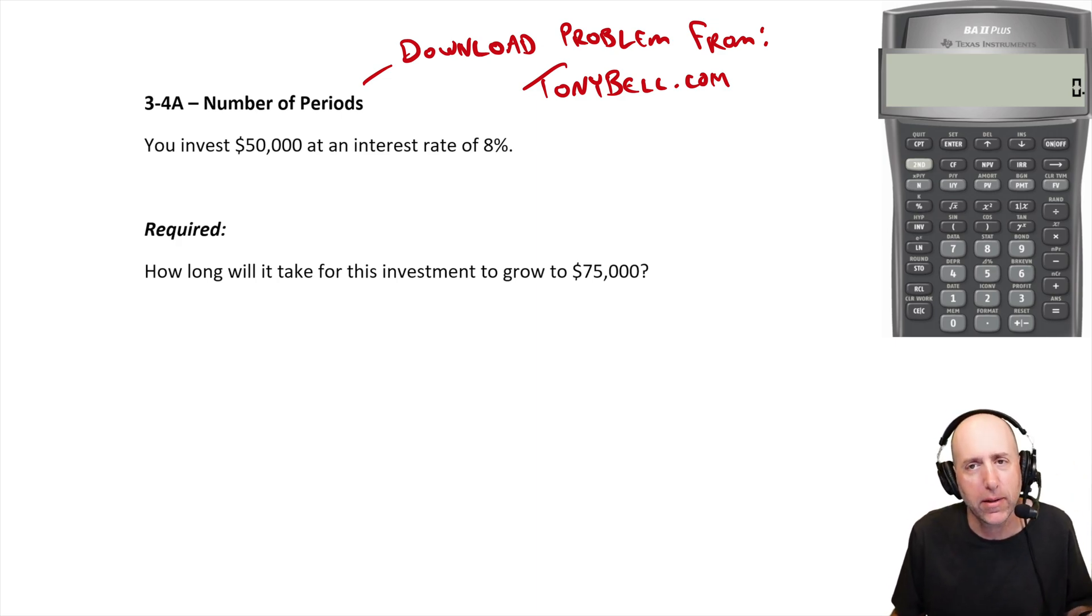So we're given present value - you invest $50,000 today at an interest rate of 8%. It says how long will it take for this investment to grow to $75,000? So that's the future value. We've been given everything but how long, the number of periods.